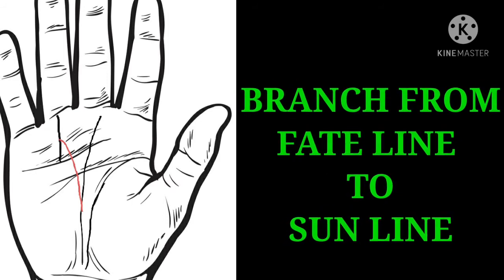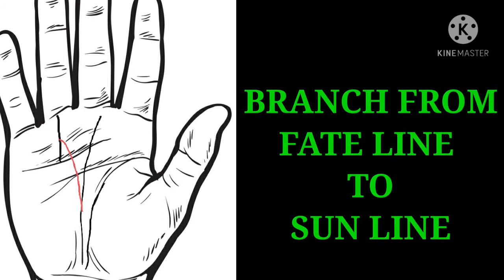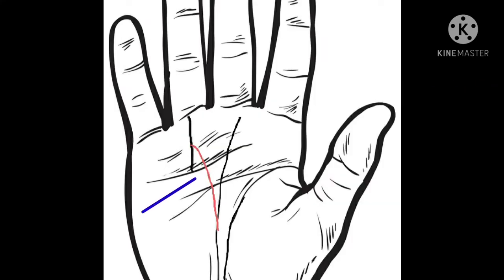Branch from fate line to sun line. If any branch of luck line is going out of fortune in the palm, then it is believed that such people are highly likely to get high posts in the government sector, and the chances of government jobs in their lives is very good.